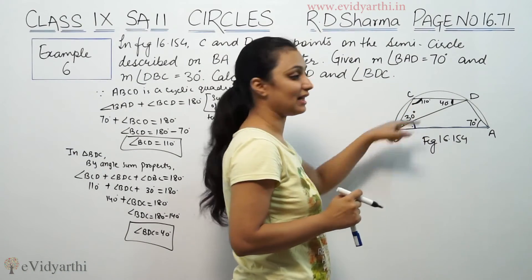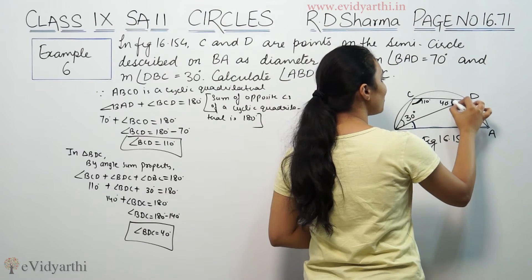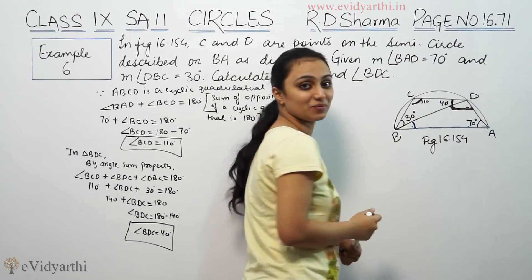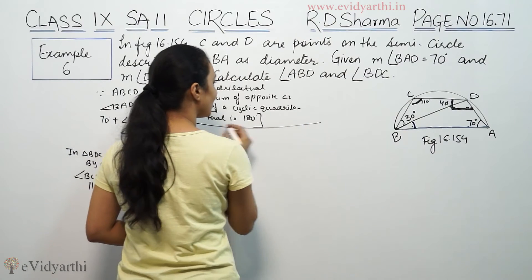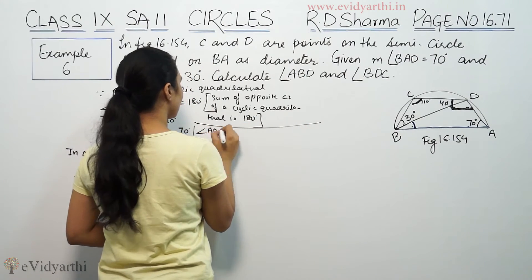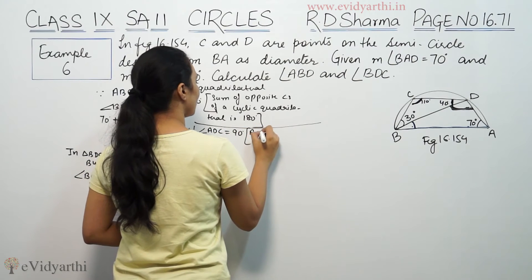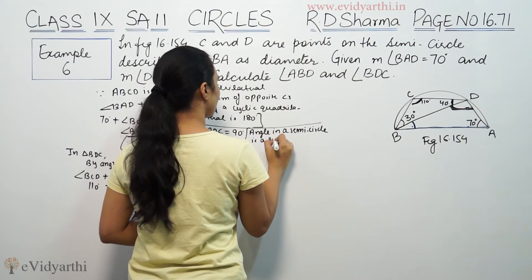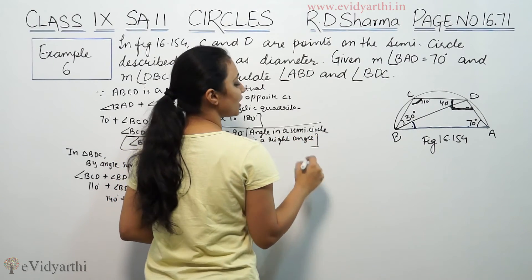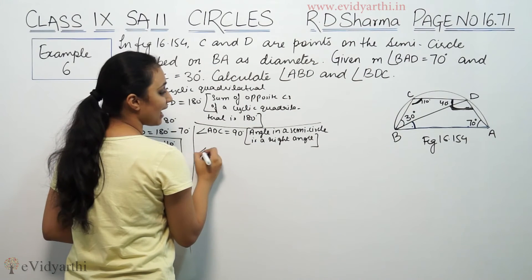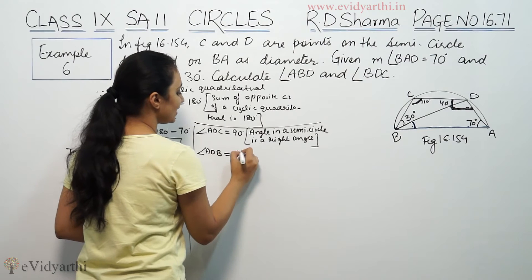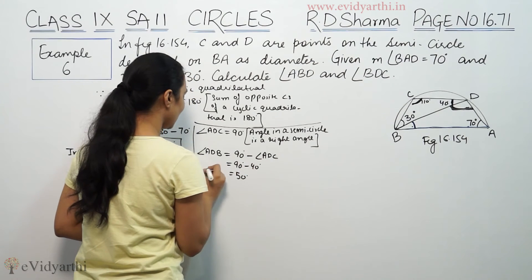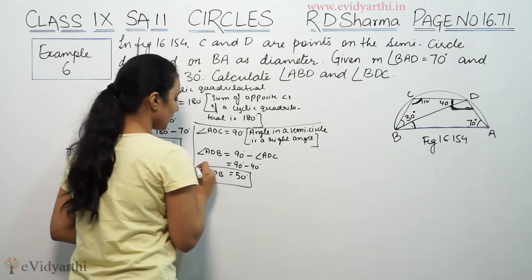Angle in a semicircle is a right angle, so angle ADC equals 90 degrees. Therefore angle ADB equals angle ADC minus angle ABC, which is 90 minus 40, giving us 50 degrees.